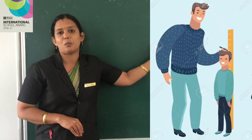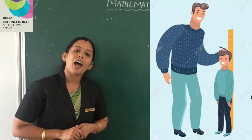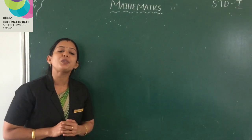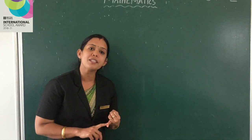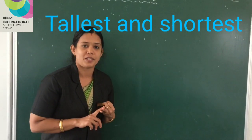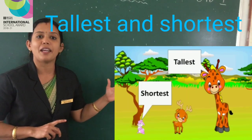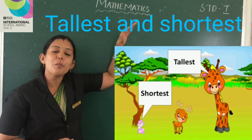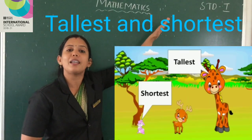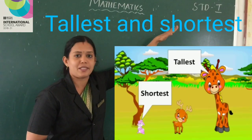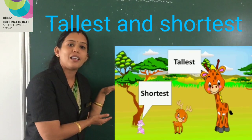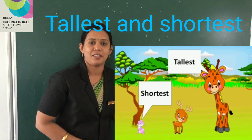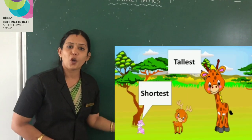When we compare the height of three objects, in that case we use the words tallest and shortest. In the case of height, we use tallest and shortest.